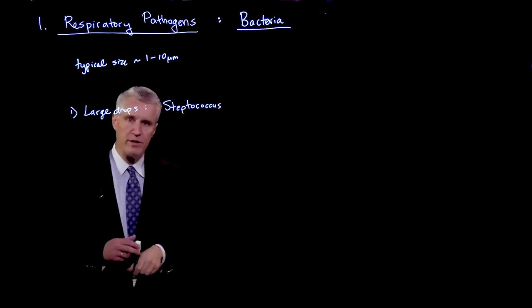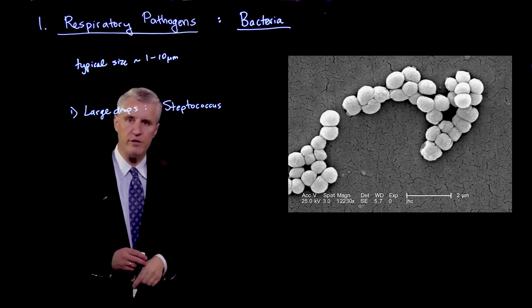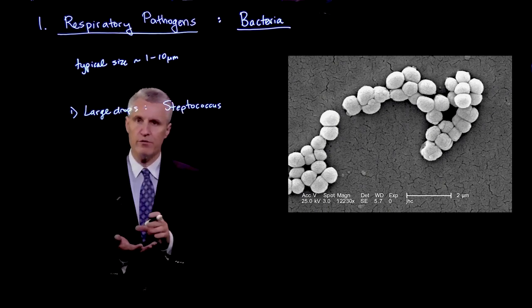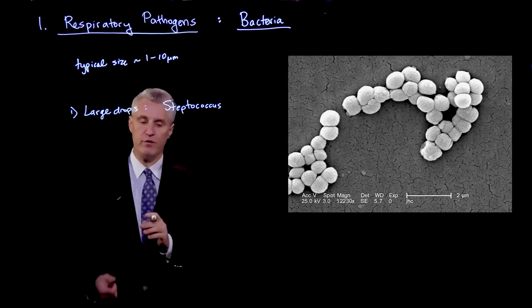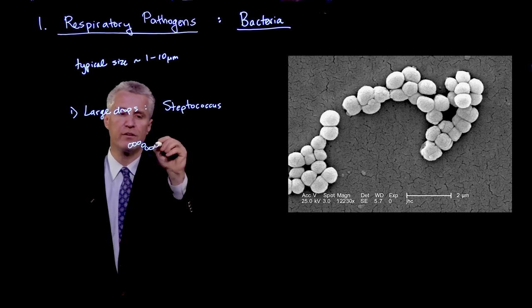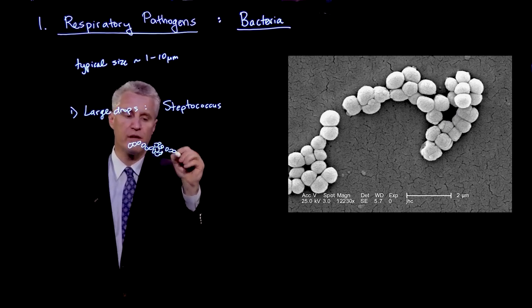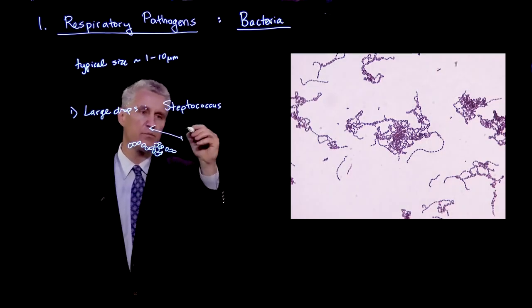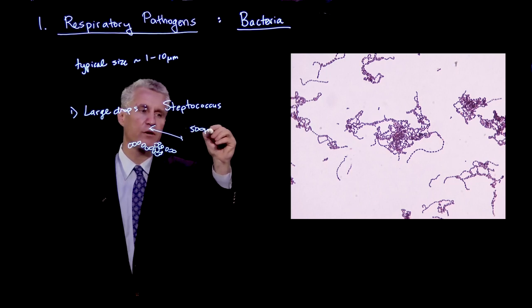So the streptococcus bacteria, which is shown here, has a typical size that's around 2 microns, so it's on the smaller end. And it forms chains and even larger colonies that may have different structures. And the total size of the colonies can vary to be as big as even 500 microns.